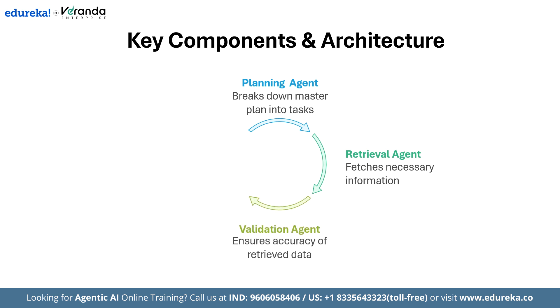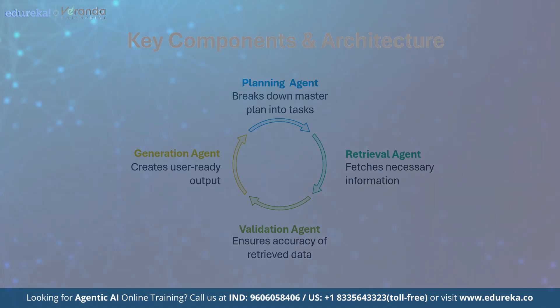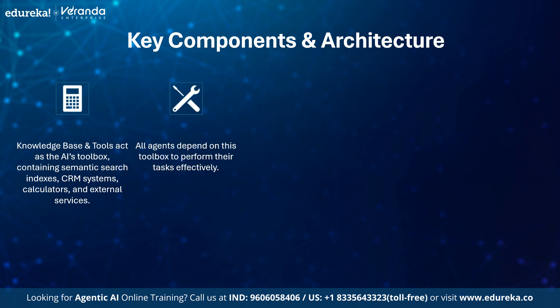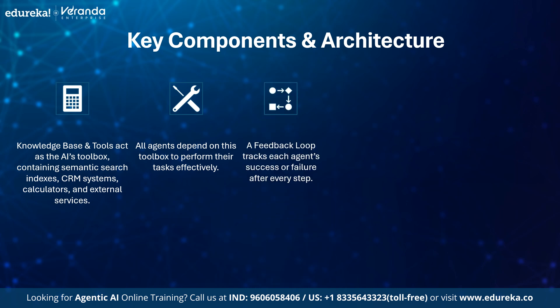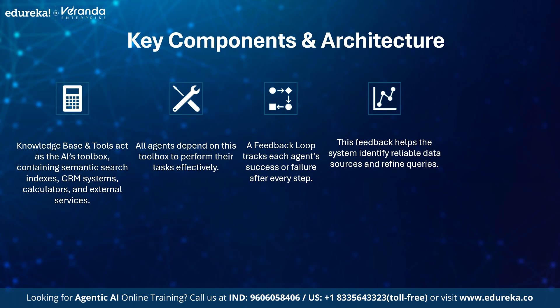Once data comes back, a validation agent steps in to verify accuracy, retrying a failed lookup or switching to a backup source if something's off. Finally, a generation agent assembles the verified pieces and crafts the polished, user-ready response. All these agents rely on the knowledge base and tools — the AI's toolbox filled with everything from semantic search indexes and CRM systems to calculators and external web services. And finally, there's the feedback loop: every time an agent completes a step, it logs whether it succeeded or not. That feedback gets fed back into the system, helping the agents learn which data sources are reliable and which queries need fine-tuning. Over time, the entire pipeline becomes faster, more accurate, and more resilient.